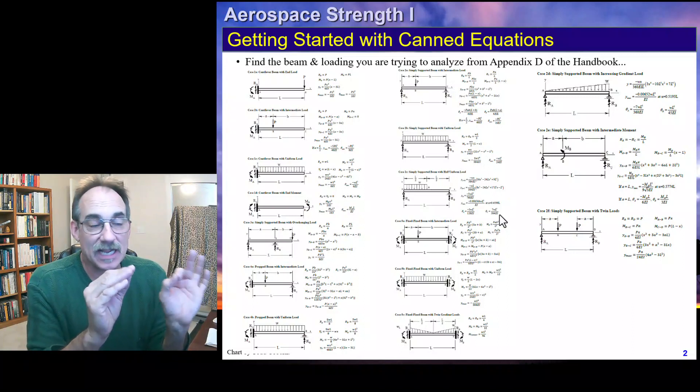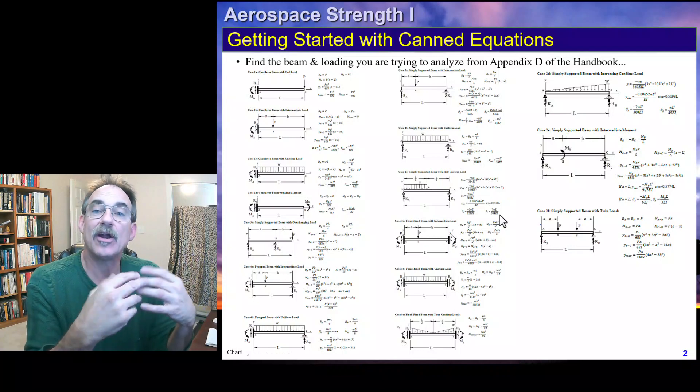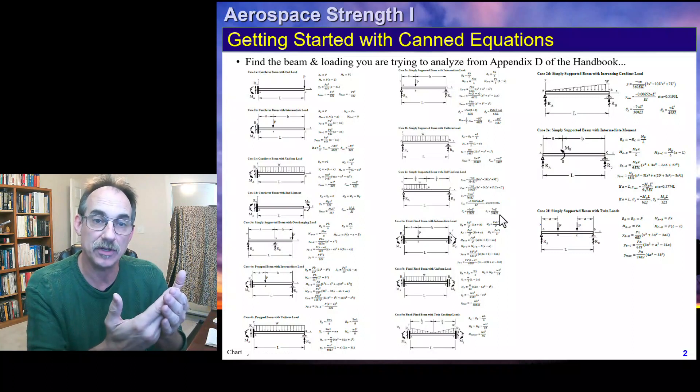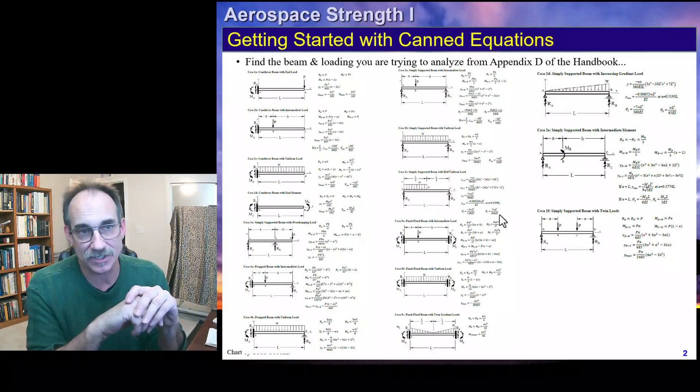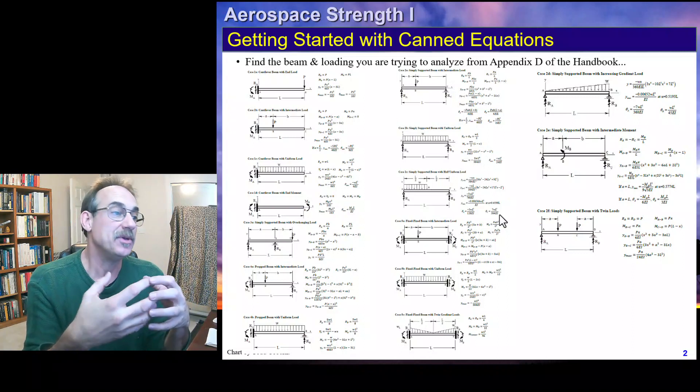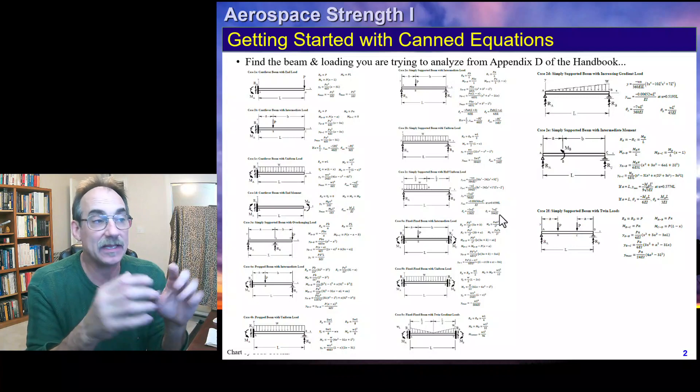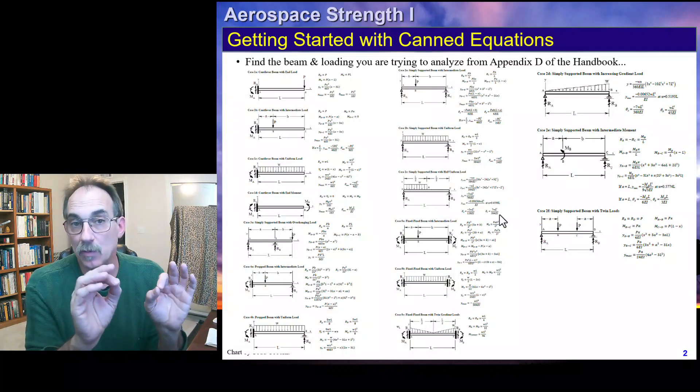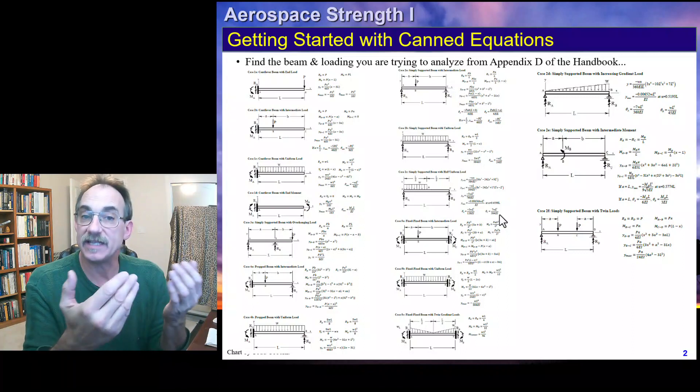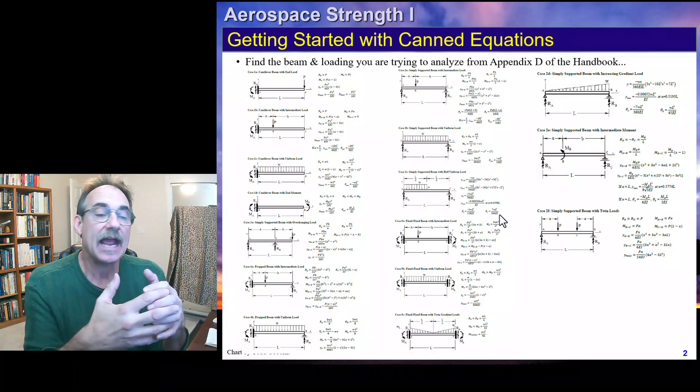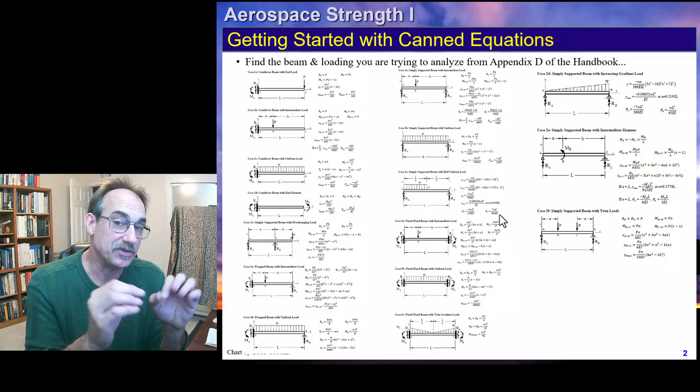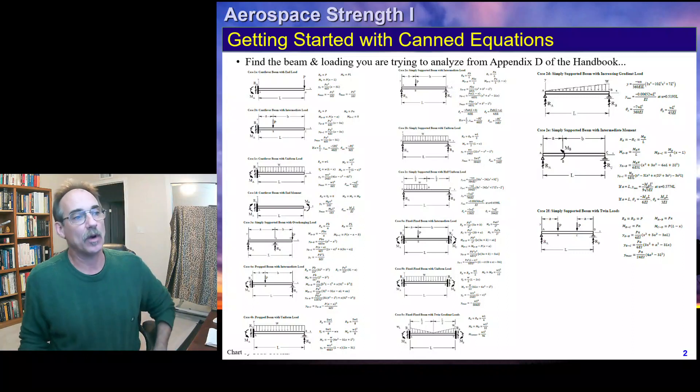If it's not precisely there, often you can characterize the loading so that you can use a couple of these cases and superimpose those. When that happens, it might be the easiest way. And then sometimes you have to manipulate these cases. You can still construct it, but it probably won't be the easiest way. We're going to look at some cases and see what is the easiest way, and then start looking for when we might go back to a more direct approach of using singularity functions.